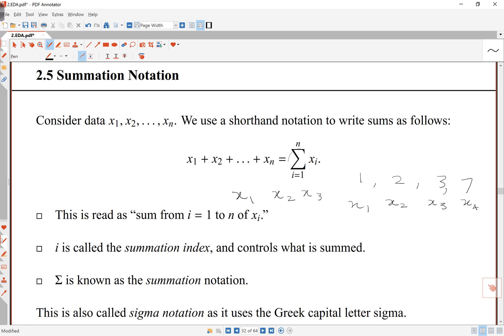And this symbol here means adding, so I've got plus, plus, and I keep adding this until I get to the last one, which is xn. So this is a shorthand way of writing the sum of numbers. And we read this as sum from i equals 1 to n of xi. i is the summation index. It controls what's being added up. And sigma here, the Greek letter, is called essentially summation notation here.